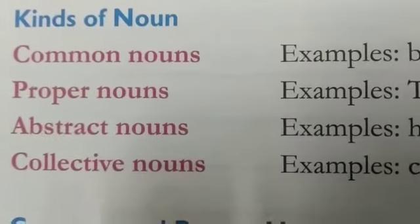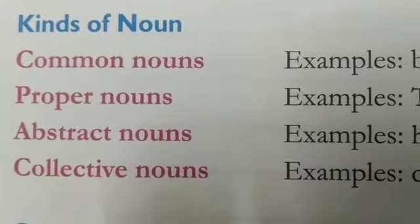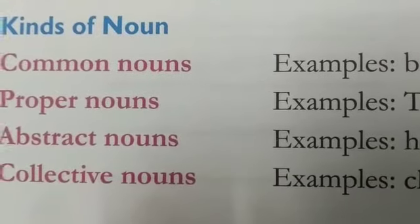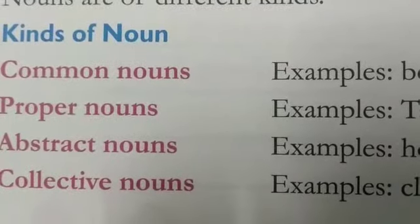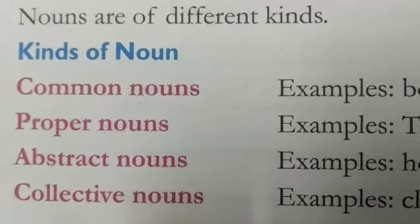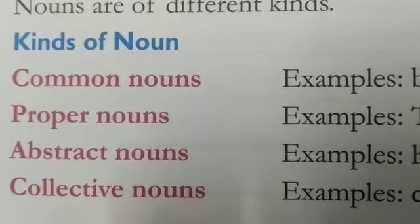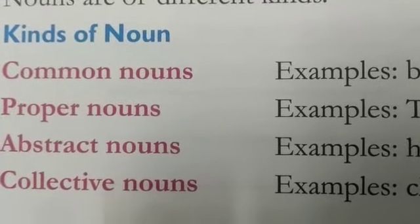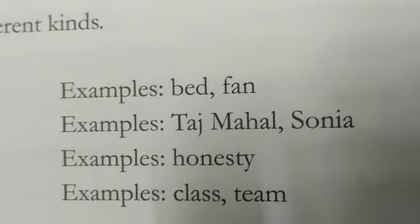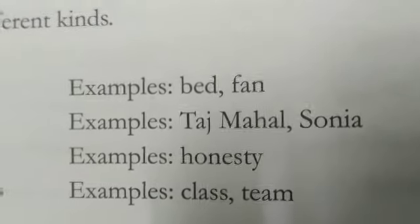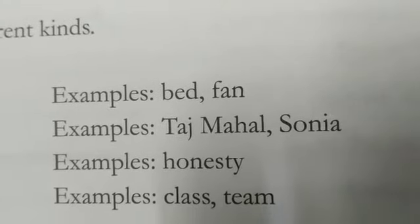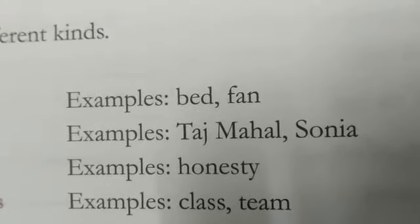Second is proper noun. What is the proper noun? A noun which is a special name of a particular person, animal, place or thing is known as a proper noun. Proper मतलब किसी particular व्यक्ति की बात की जाती है तो वो proper noun में आता है। Example देखो — ताजमहल and सोनिया। ताजमहल एक special building का नाम है, सोनिया किसी एक लड़की का नाम है — तो ये proper noun है।